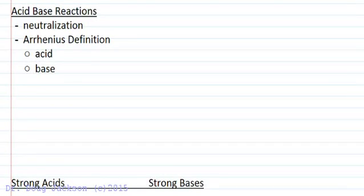Let's talk about acid-base reactions. We're going to define what an acid and a base are, look at the list of strong acids and strong bases, and then learn how to name acids — as bases are just ionic compounds that we name using ionic compound rules.